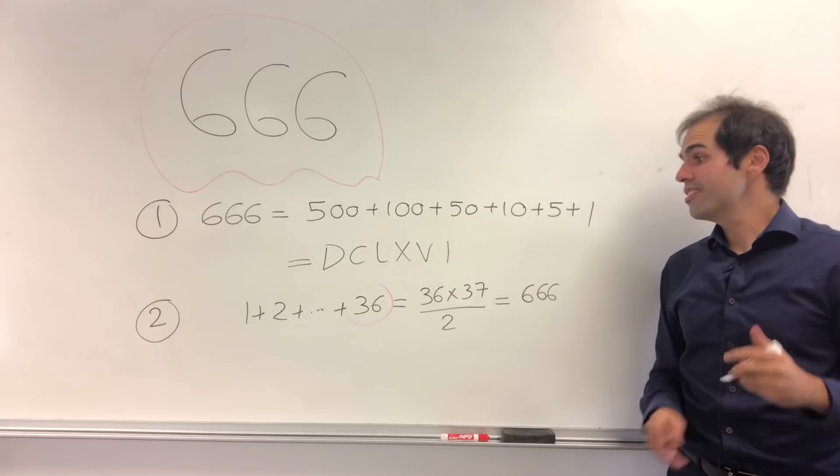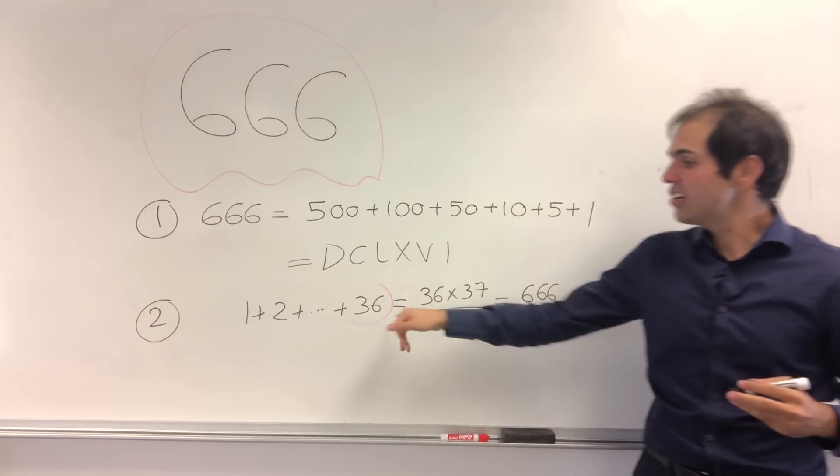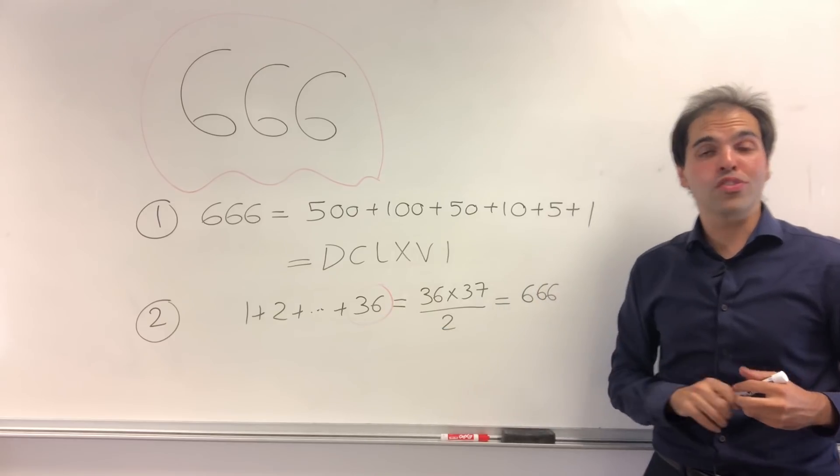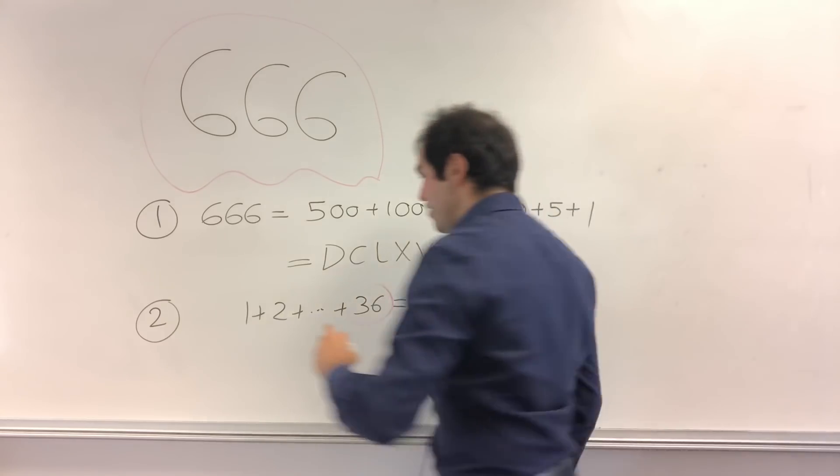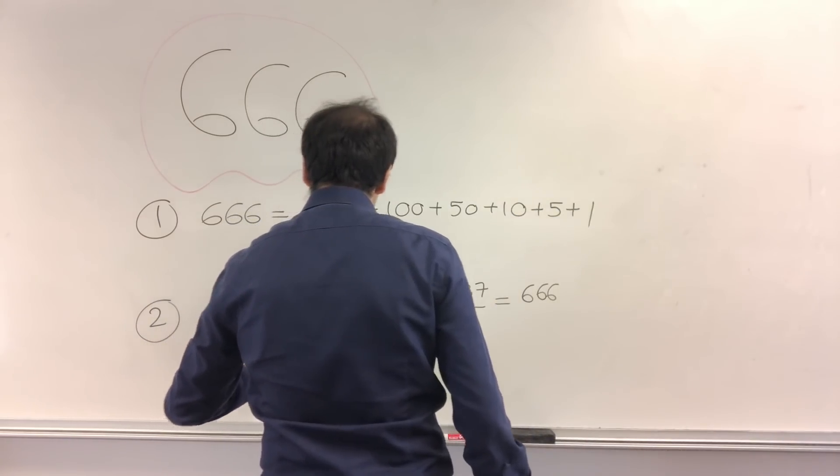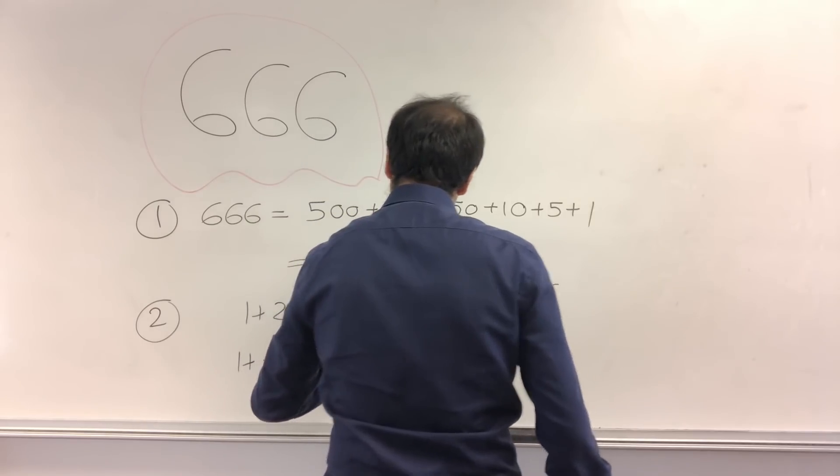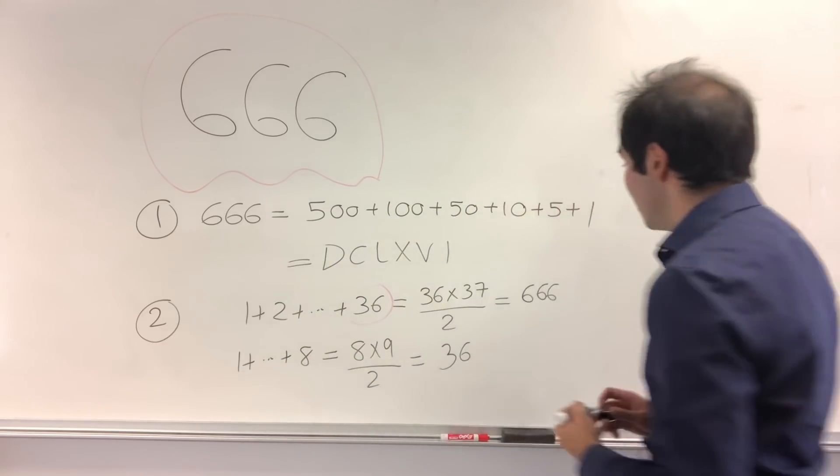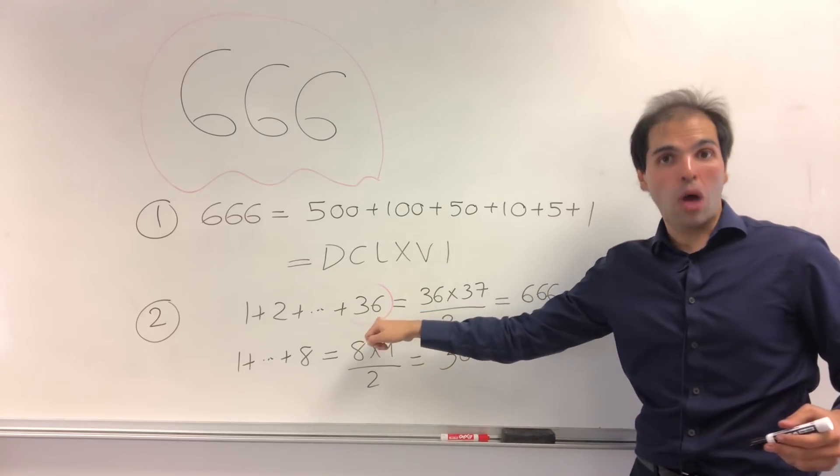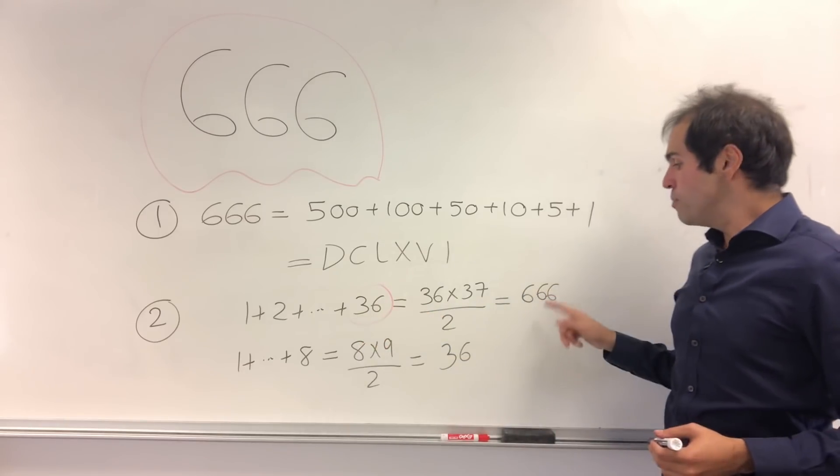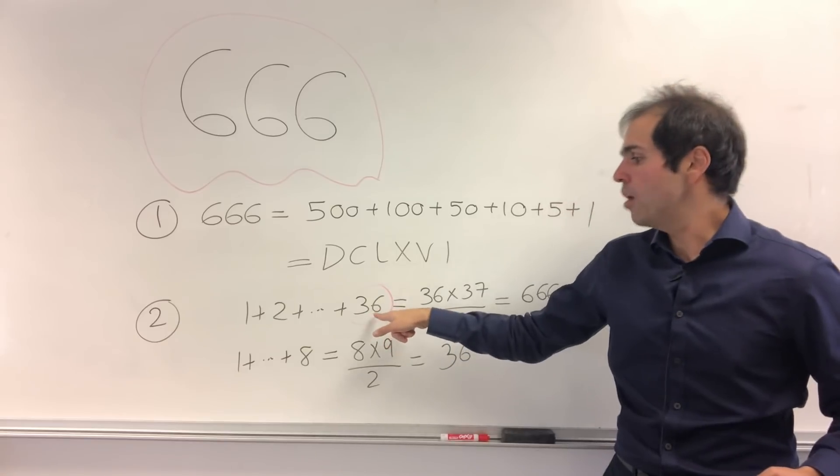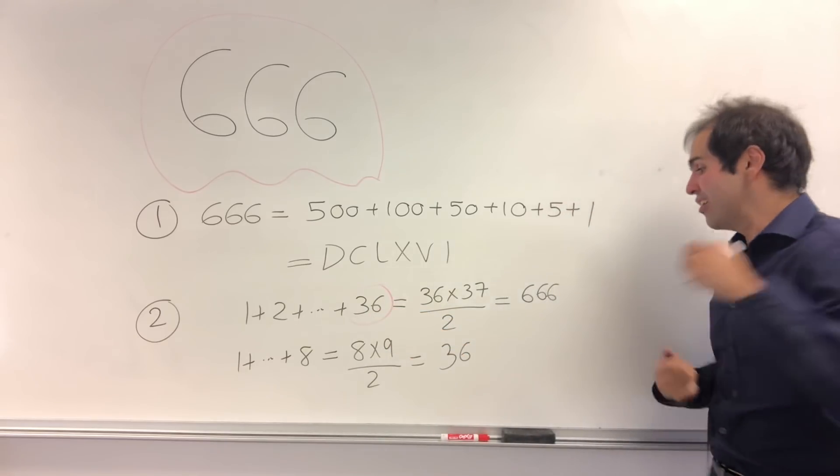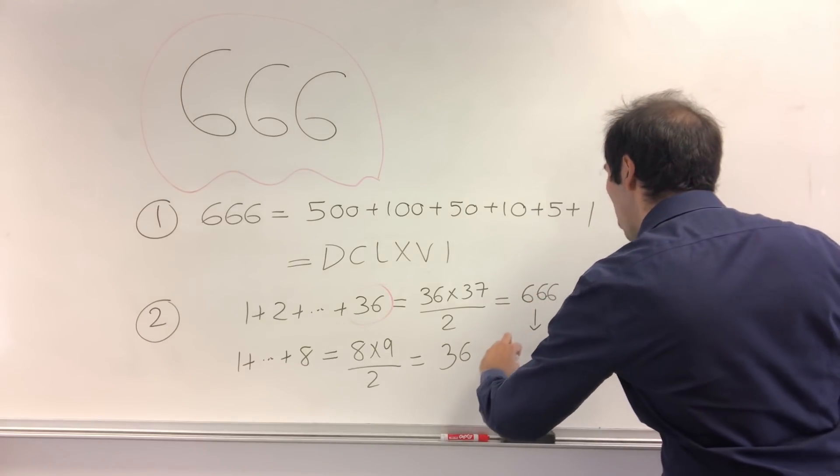But not only that, there's something even better. Because consider 36. Turns out this number is also triangular. Because if you take, I believe, the sum from 1 up to 8, well, that's 8 times 9 over 2. So 4 times 9, and that's 36. So this number itself is also triangular. So because 666 is the Gaussian sum up to a triangular number, this is what's called doubly triangular. So it's literally double the fun.